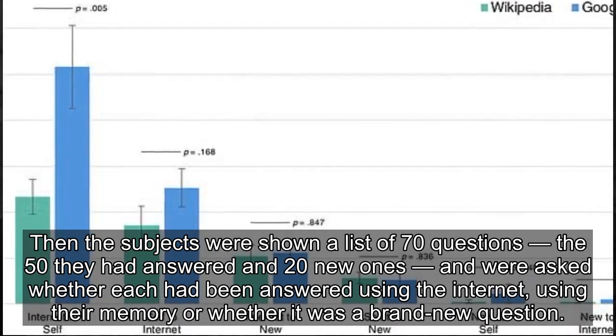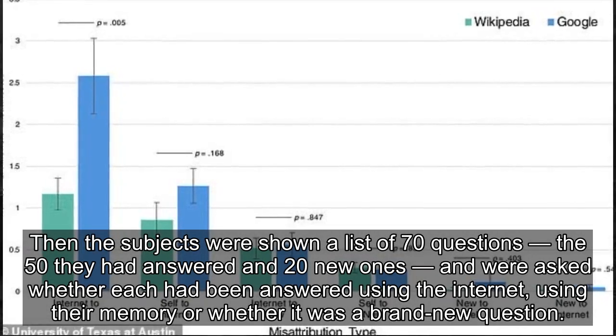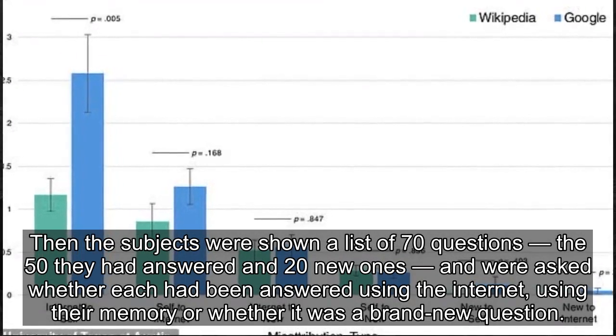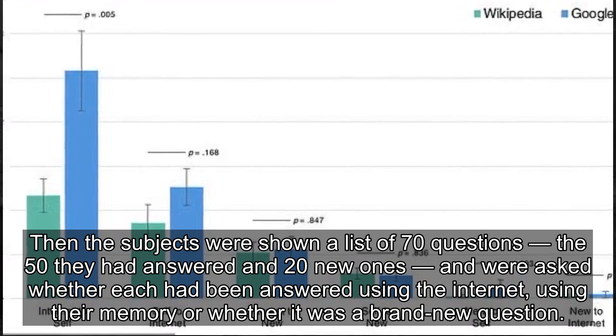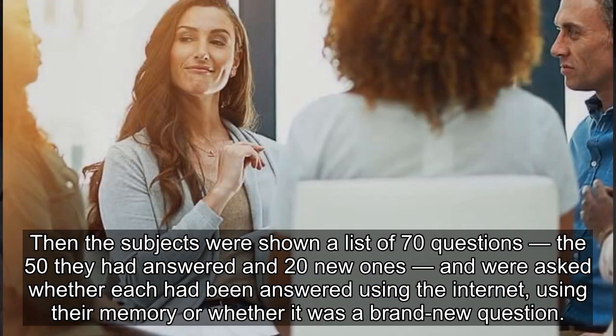Then the subjects were shown a list of 70 questions—the 50 they had answered and 20 new ones—and were asked whether each had been answered using the Internet, using their memory, or whether it was a brand new question.